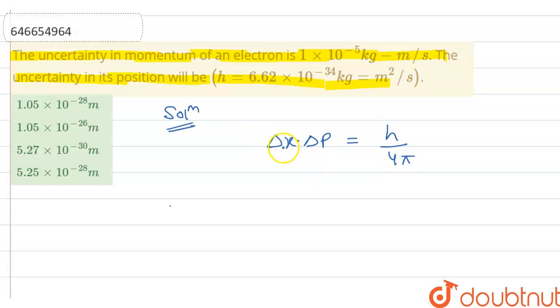So delta x is here uncertainty in position, and delta p is here uncertainty in momentum. So we have to find delta x, means uncertainty in position, that is nothing but h upon 4 pi dot delta p. Correct?